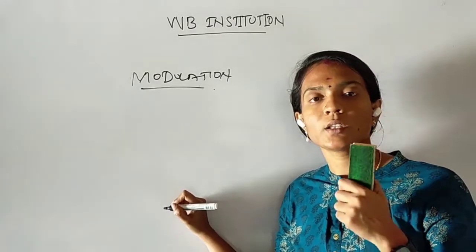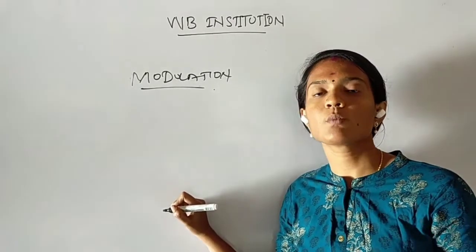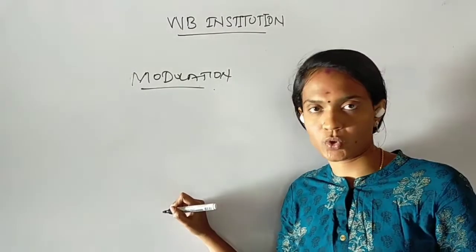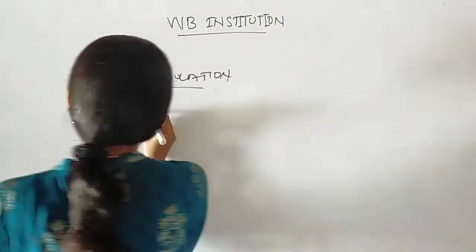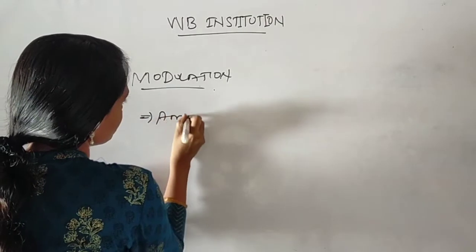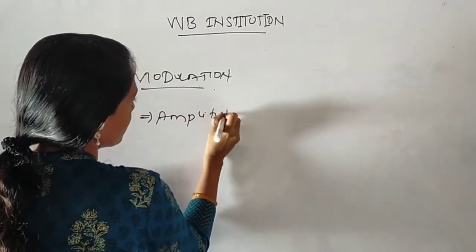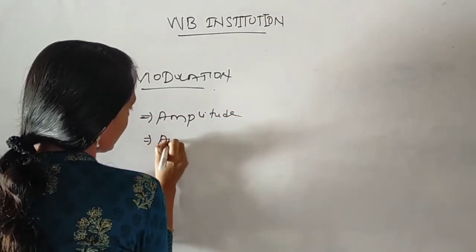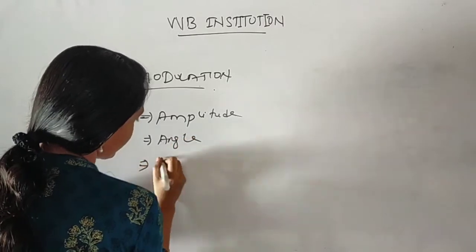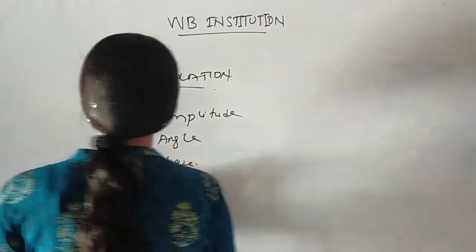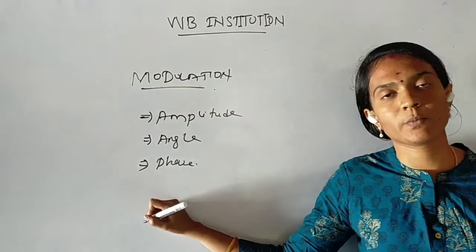There are many types, but in the syllabus we cover three types of modulation. The first one is amplitude modulation, the second is angle modulation, and the next is phase modulation.